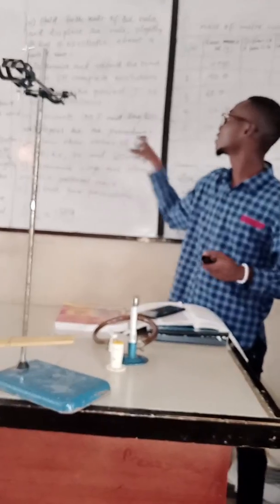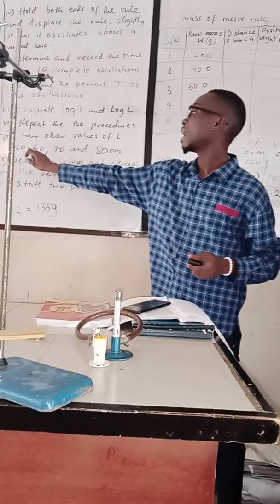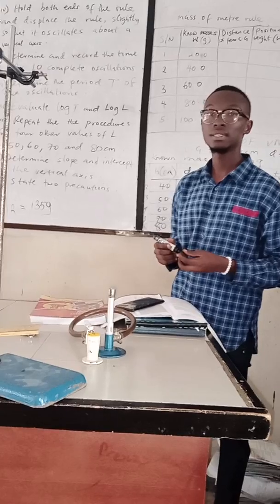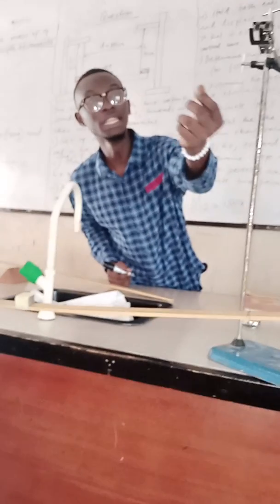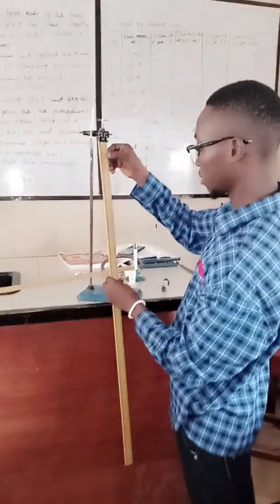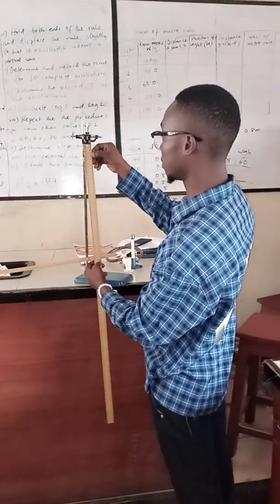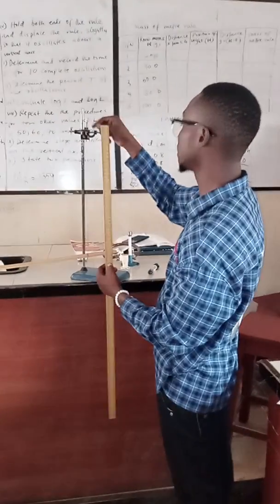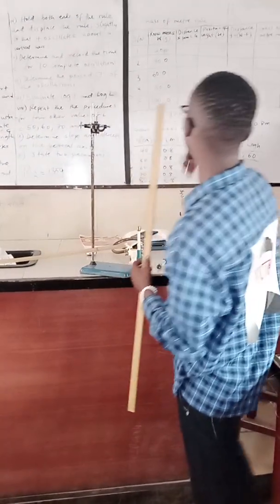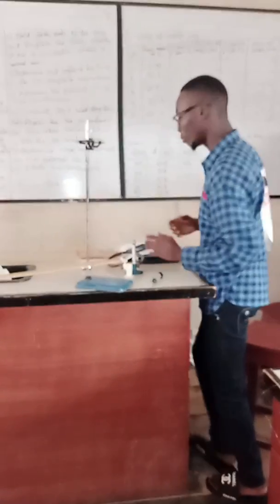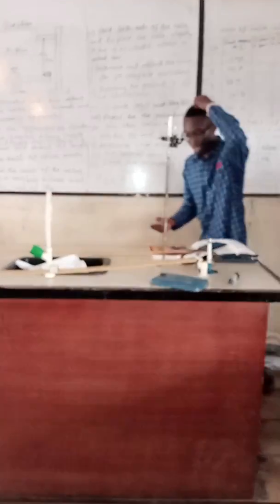We will repeat the procedure for values of h at 50 cm, 60 cm, 70 cm and 80 cm. What you are going to do is release this because from here to here was obtained to be 40 cm. The next one you are going to do, you will displace this to 50 cm and you will take your time for 10 complete oscillations.